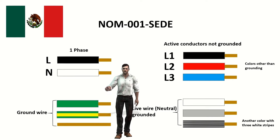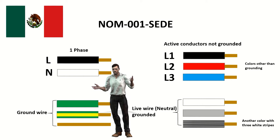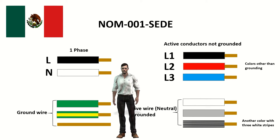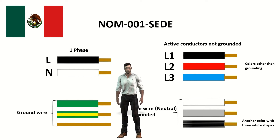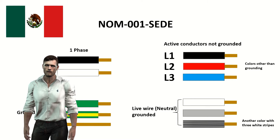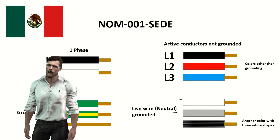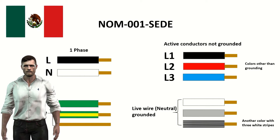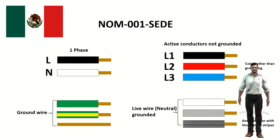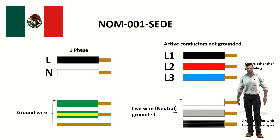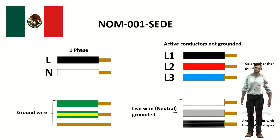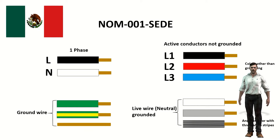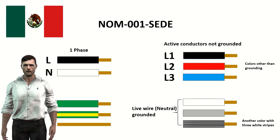The National Electrical Code also has influence in other countries of the American continent. In Mexico, the official Mexican standard NOM-001-CETA establishes the color code of the equipment grounding conductors as well as the grounded power cable, which is normally the neutral. The grounded neutral can have the colors white, gray, or a color other than green but with three white stripes. The protection or ground wire is green, green and yellow, or bare copper wire. In a single-phase installation, black is used for the active cable and white for the neutral cable. For a three-phase installation, the live wires must take colors that differ from the grounded neutral or ground wires, for example black, red and blue.